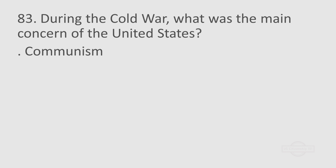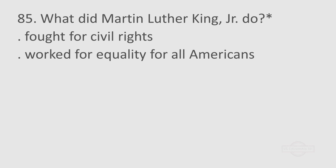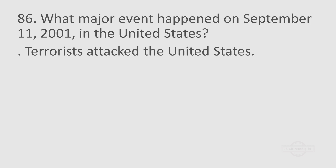Question 83: During the Cold War, what was the main concern of the United States? Communism. Question 84: What movement tried to end racial discrimination? Civil rights movement. Question 85: What did Martin Luther King Jr. do? Fought for civil rights. Worked for equality for all Americans. Question 86: What major event happened on September 11, 2001, in the United States? Terrorists attacked the United States.